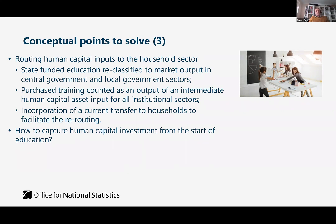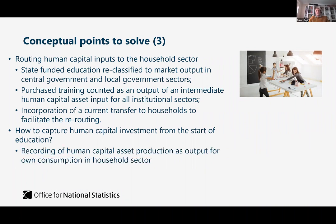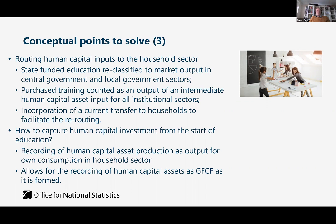The first step to capture human capital investment is recording the human capital asset production as output for own consumption in the household sector, because households are seen as consuming education and training as inputs, producing within the sector, and then consuming it themselves. This is important because it allows for the recording of human capital assets as gross fixed capital formation as it is formed — so when somebody starts school, we can show the human capital forming from that point in time and record it as GFCF in their human capital asset, rather than recording work in progress until they reach 16 and can enter the job market.